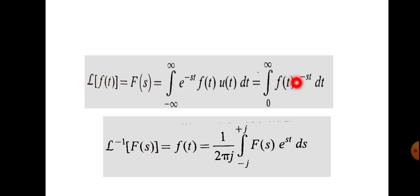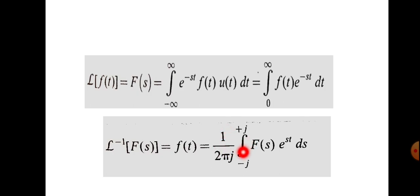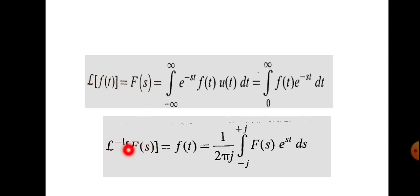Given a function, you can substitute directly for f(t) to find its Laplace transform. Conversely, the inverse Laplace transform is given by L⁻¹{F(s)} = f(t) = (1/2πj) · integral from -j∞ to +j∞ of F(s) · e^(st) ds. The Laplace transform converts a time-domain signal into the s-domain, while the inverse Laplace transform converts back.